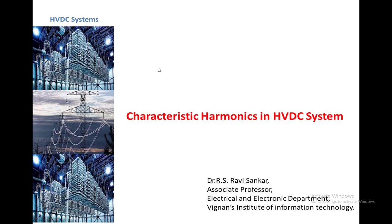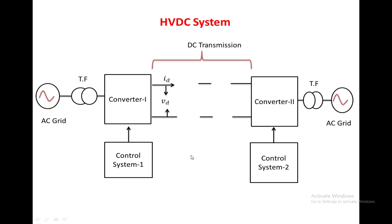Welcome to the class on characteristic harmonics in HVDC systems. An HVDC system consists of two AC sources, each connected through a transformer on the AC side. Converter 1 converts AC voltage into DC voltage, and after long distance transmission, Converter 2 converts the DC voltage back into AC voltage supplied to the AC grid. Both converters are controlled by a control system that provides the desired pulses.